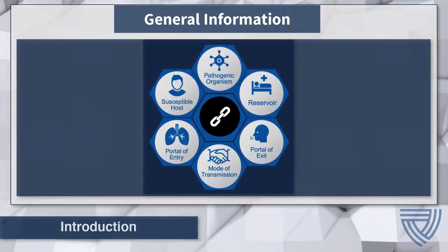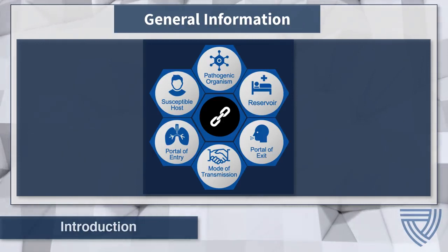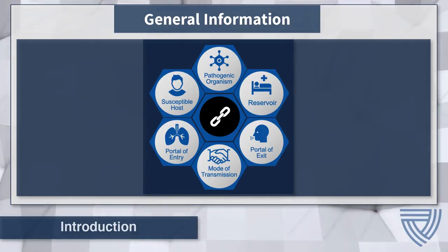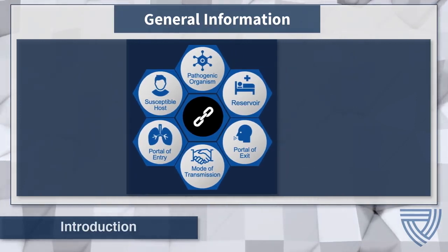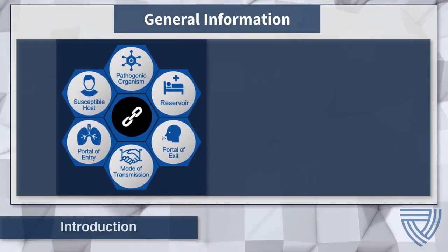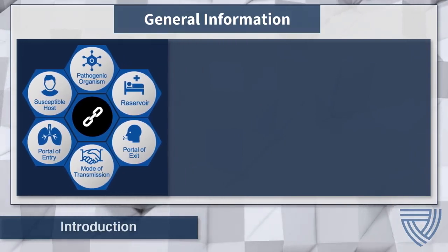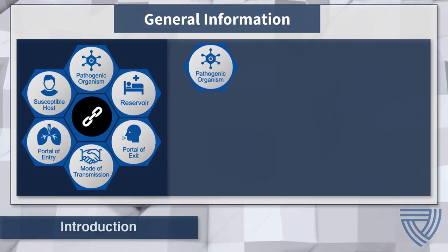When preparing to care for patients with an infectious disease, it is helpful to understand the series of events that occur to cause infection. This series of events is known as the chain of infection, and each link in the chain of infection presents us with an opportunity to break the chain to prevent the spread of the disease.